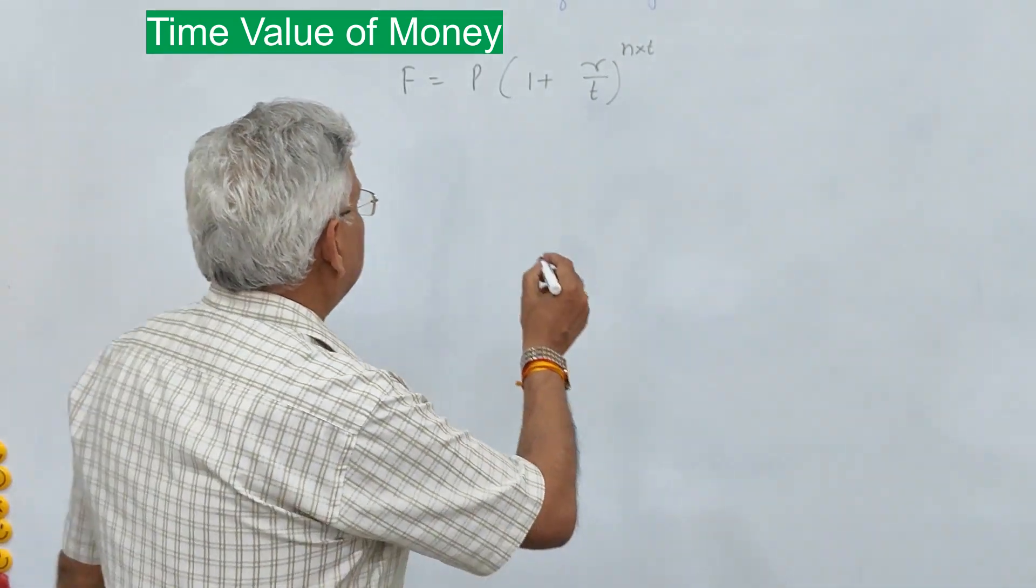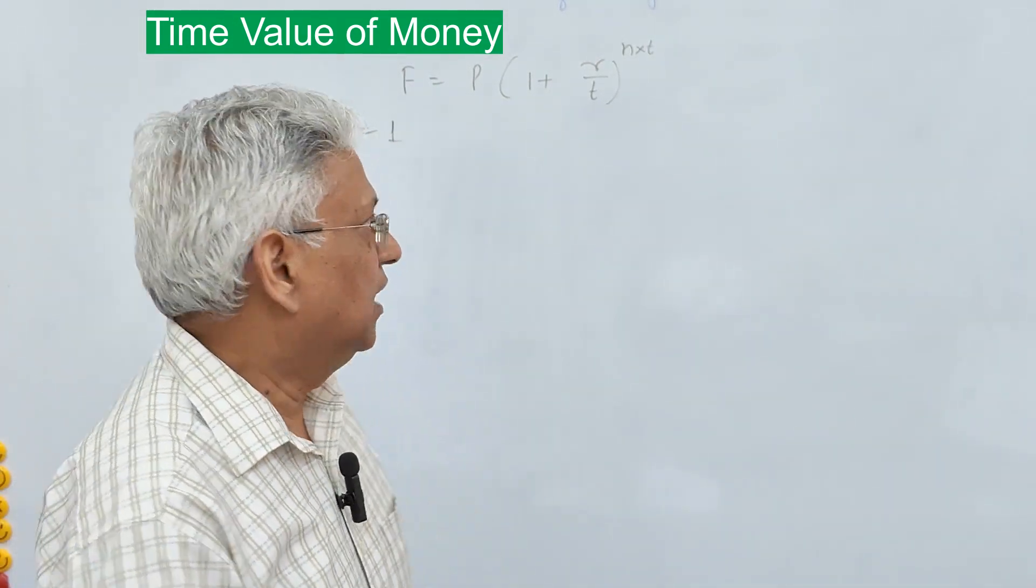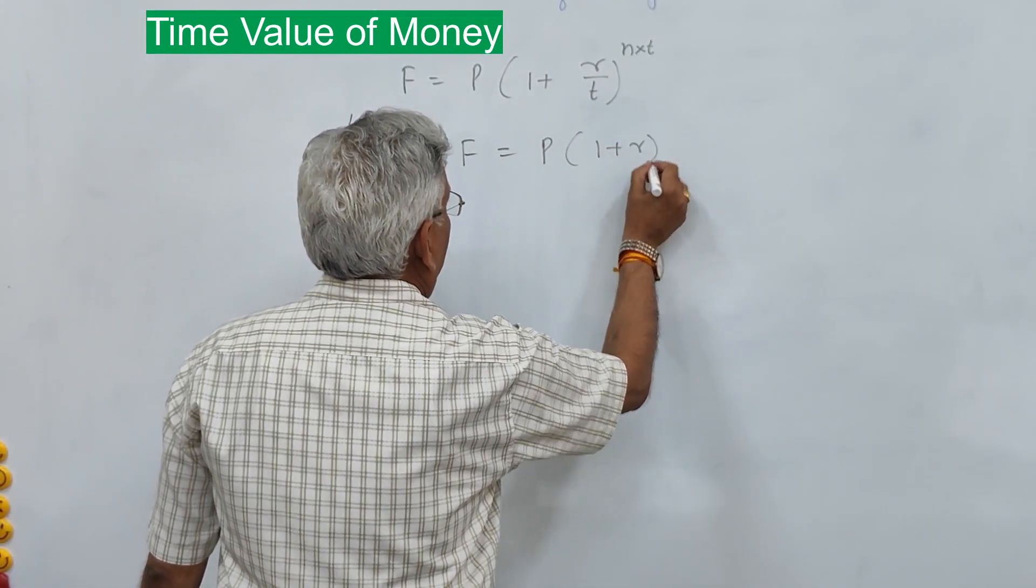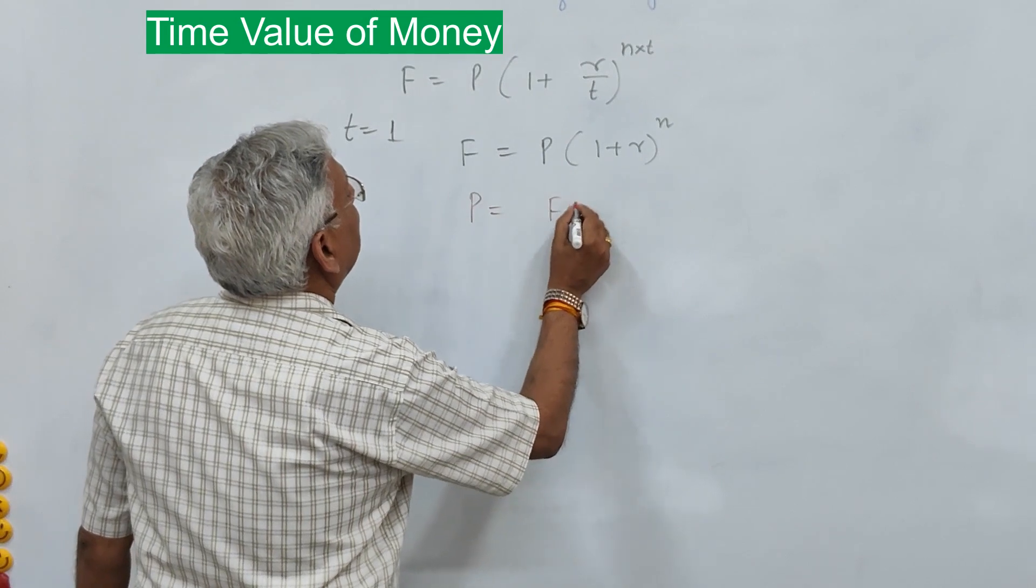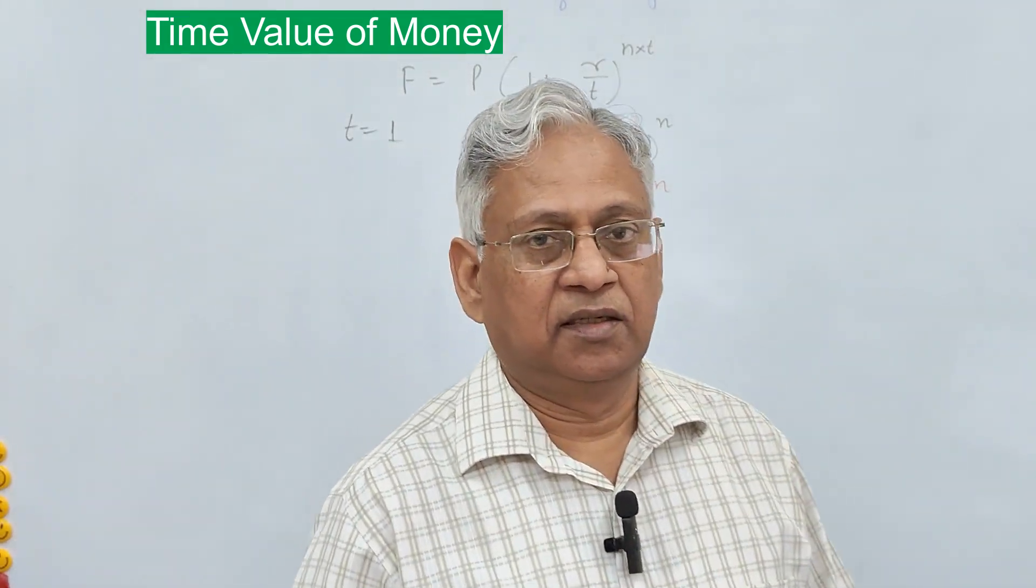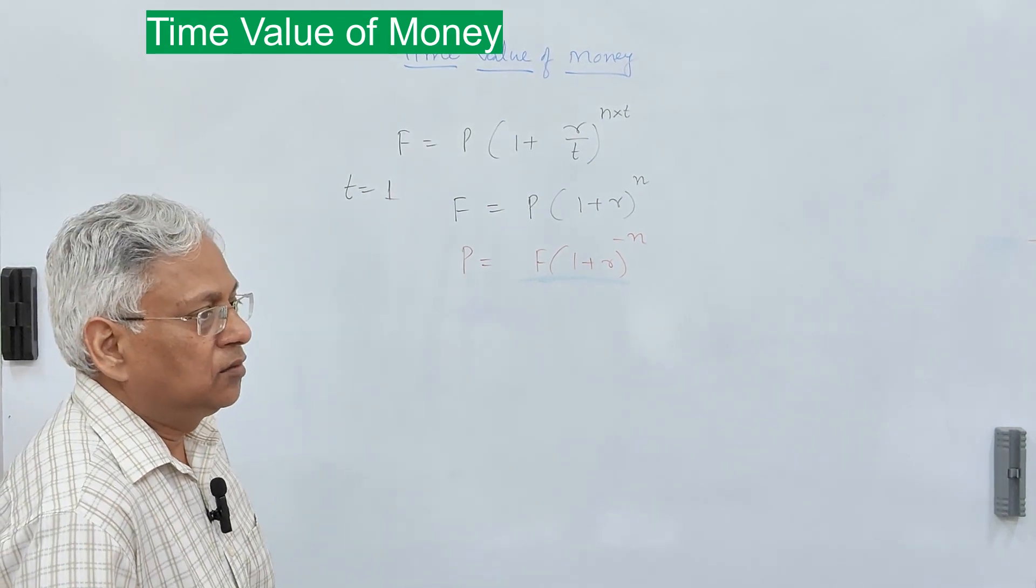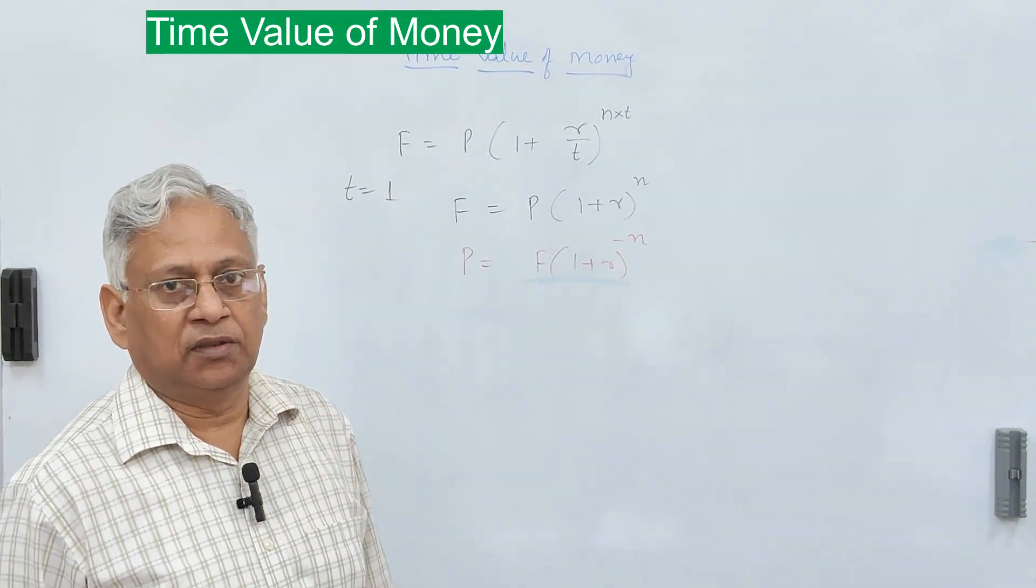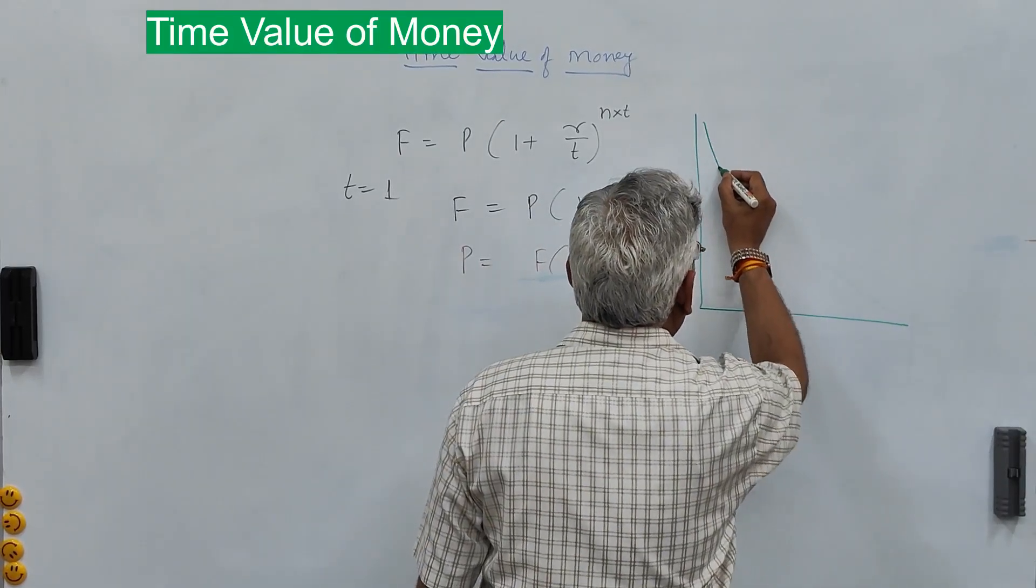So if T is one, that means if the interest is paid annually, then this equation becomes F = P(1 + R)^N or this can also be written as P = F(1 + R)^(-N). That is how your money will reduce with time. If you want to find out what is the present value of 1000 rupees 25 years into the future, that is how the money reduces its value.